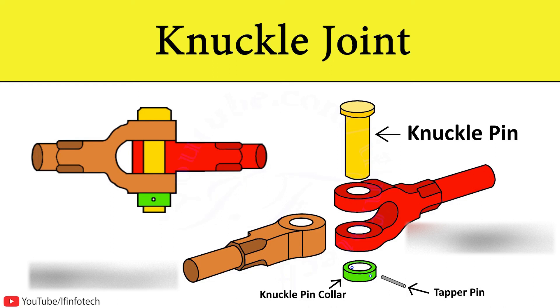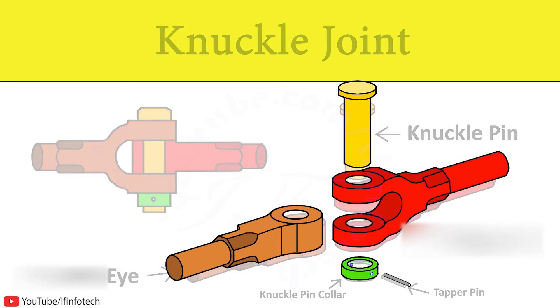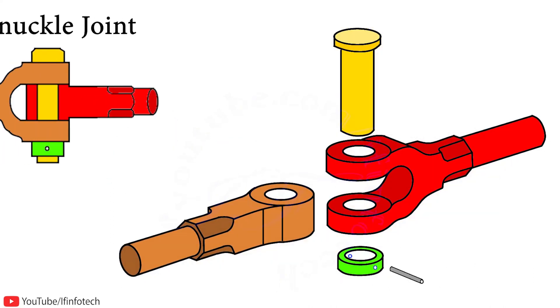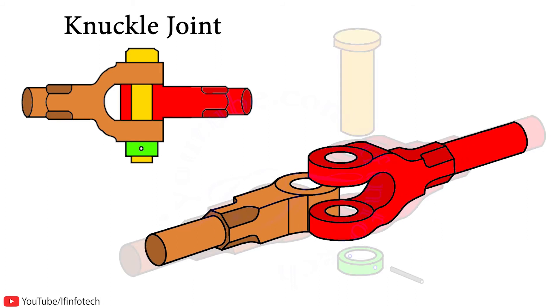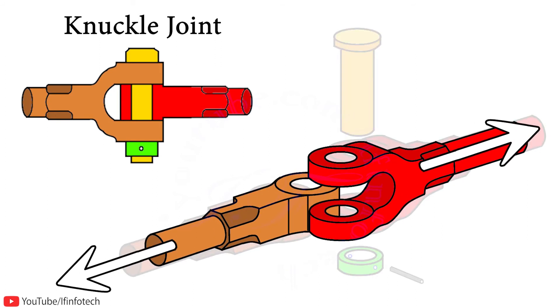In today's session, we'll learn about the design procedure for a knuckle joint. This type of joint is used for tensile applications, where we join two rods which are acted upon by tensile load.